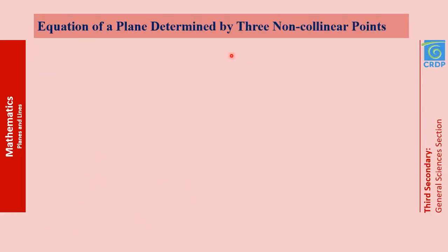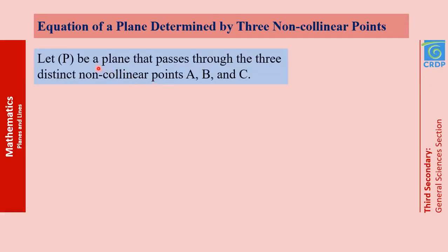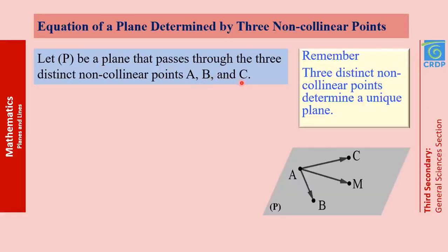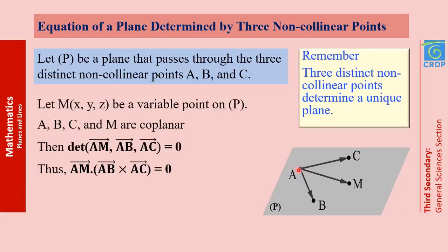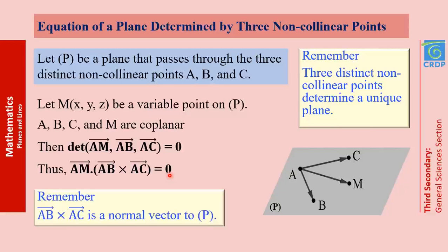Now the third case: the equation of a plane determined by three non-collinear points. P is a plane that passes through three non-collinear points A, B, and C. Three distinct non-collinear points determine a unique plane, so A, B, and C are located inside the plane. If we choose a variable point M on P, the three vectors AB, AM, and AC are coplanar, so the determinant equals 0, or AM · (AB × AC) = 0. Note that AB × AC is a vector normal to the plane.